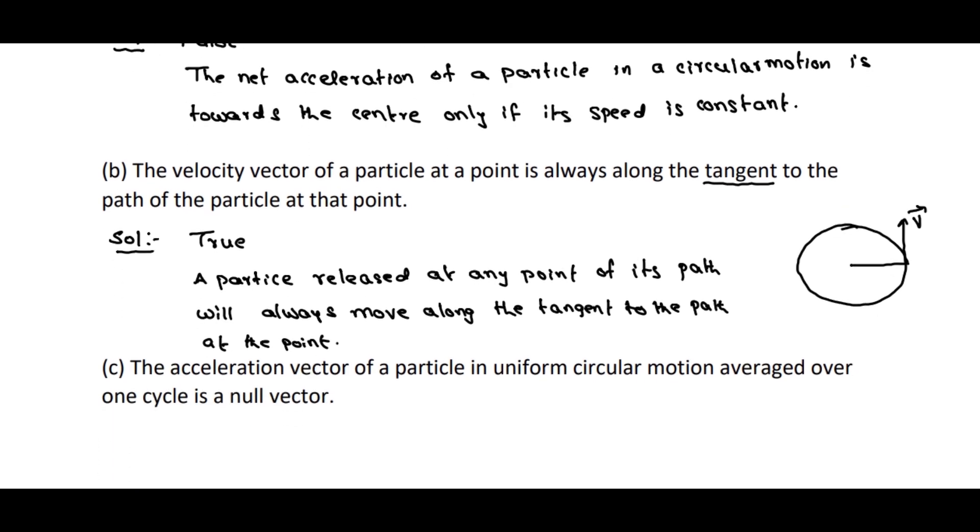Coming to C. The acceleration vector of a particle in uniform circular motion averaged over one cycle is a null vector. This statement is true.